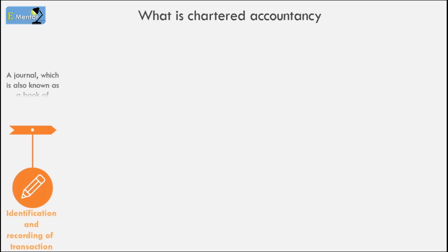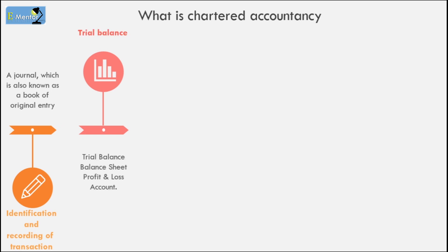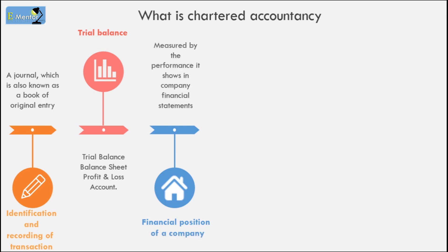Let's first understand what a CA does. We need to know accounting — in this, business transactions are recorded, such as the company's purchases, sales, employee salaries, and all company payments. On this basis, a profit and loss account and balance sheet are prepared, which show the company's financial position — how many assets they have and their liabilities. This is the work of accounting and an accountant.